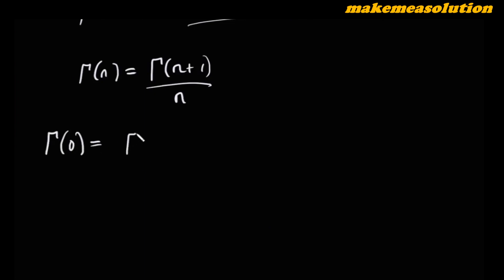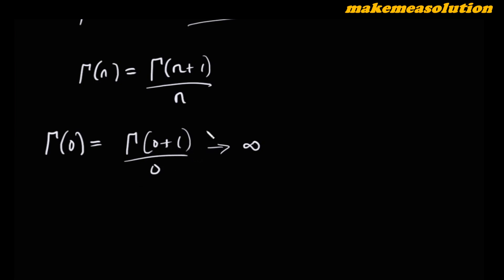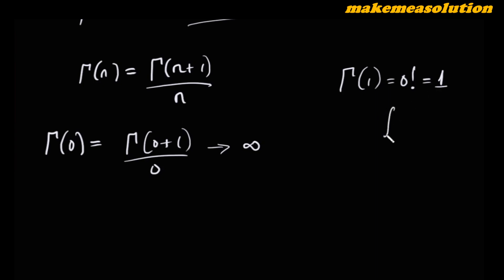So let's start with gamma of zero. Gamma of zero will be gamma of zero plus one divided by zero, so this approaches infinity. Gamma of zero plus one is gamma of one, and gamma of one is zero factorial. Zero factorial mathematically is still one.